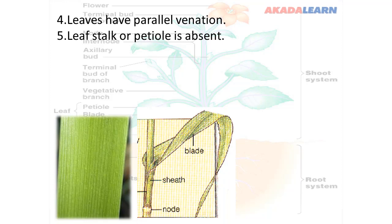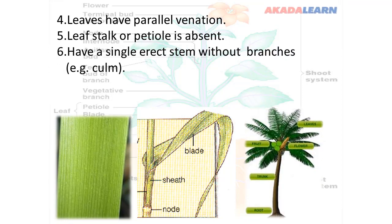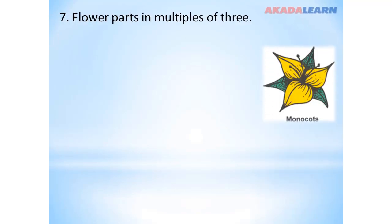The leaf stalk or petiole is absent in monocotyledons. They have a single erect stem without branches. Flower parts are in multiples of three — that is three, six, nine, twelve, fifteen. The flower parts of a monocotyledon are a multiple of three.